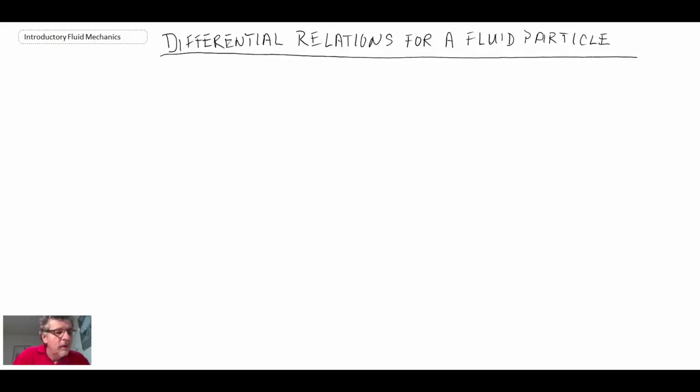We're now going to start taking a look at the second main technique in the analysis of fluid mechanics, and that is the area of differential relations for a fluid particle. So this is the second main technique, small scale analysis.